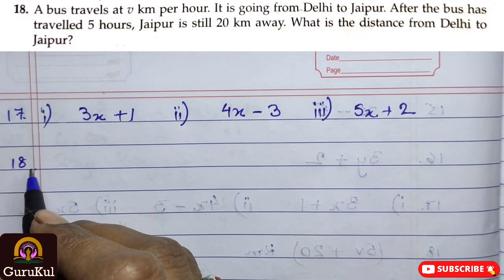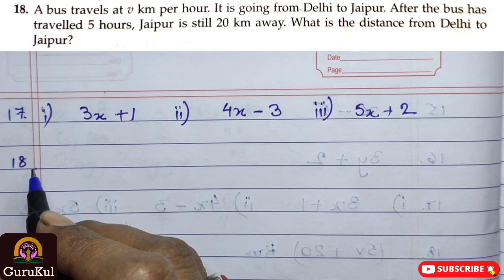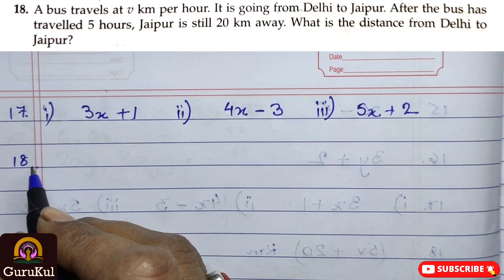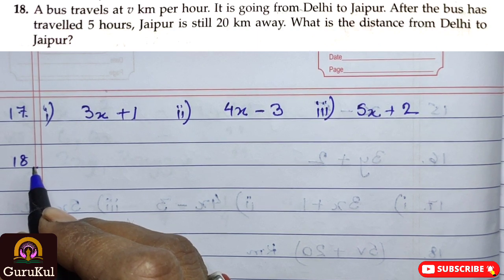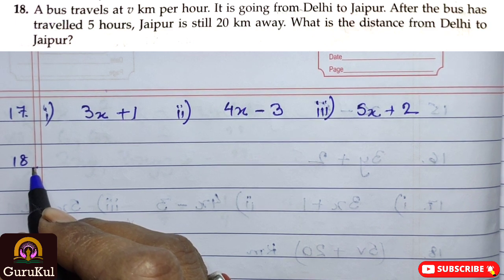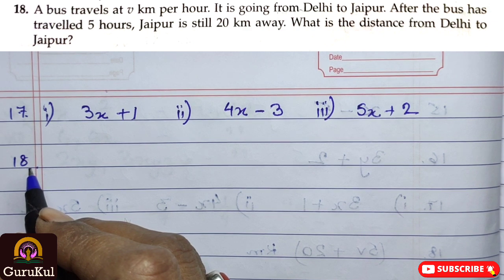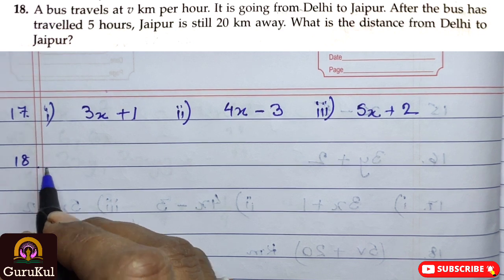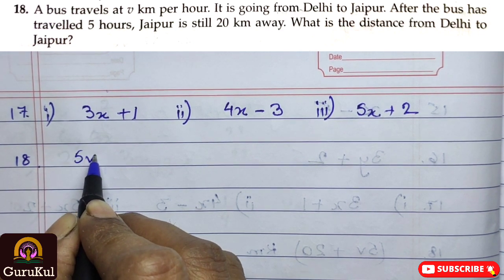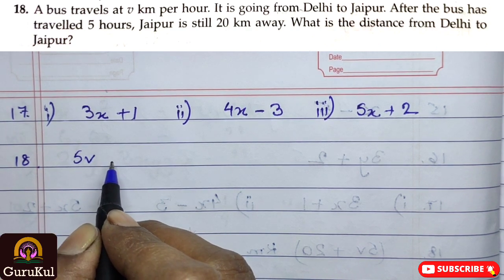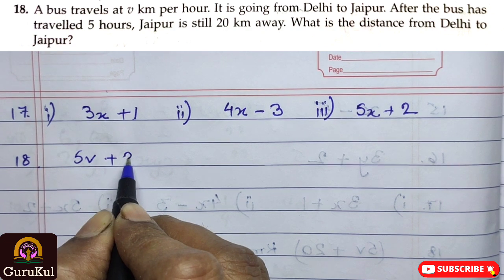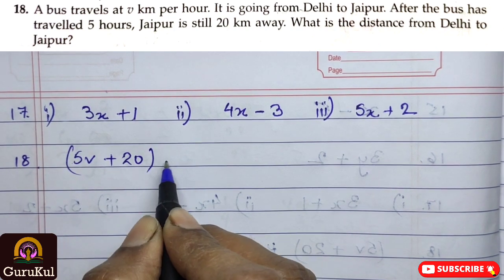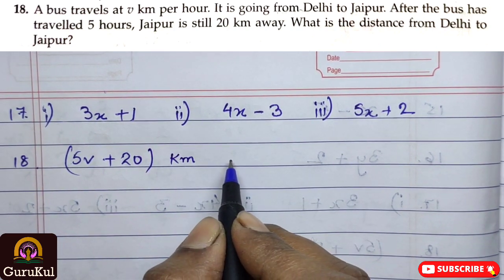Question number 18. A bus travels at V km per hour. It is going from Delhi to Jaipur. After the bus has travelled for 5 hours, Jaipur is still 20 km away. So, what is the distance from Delhi to Jaipur? So, here bus travels at V km per hour. So, that means after travelling for 5 hours, the distance is 5V. But still, Jaipur was 20 km away. So, that means plus 20. So, 5V plus 20 is the total distance from Delhi to Jaipur.